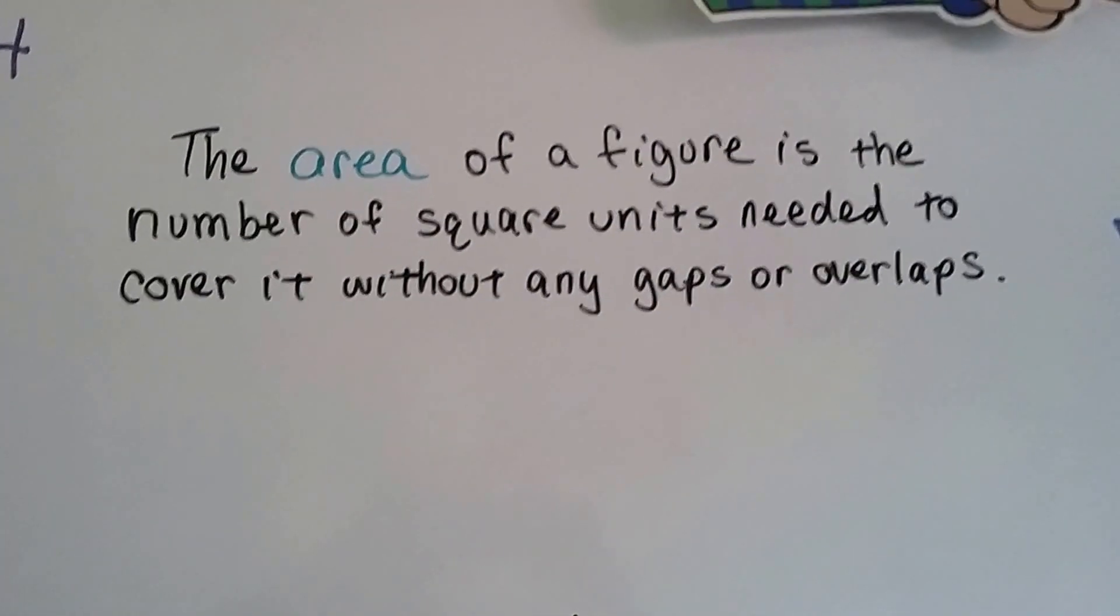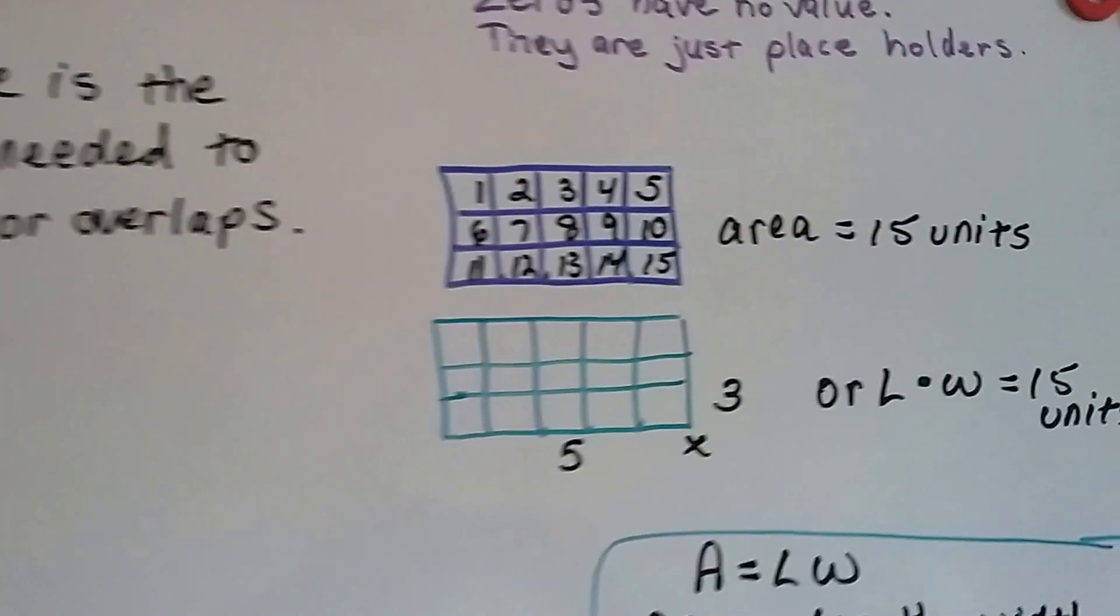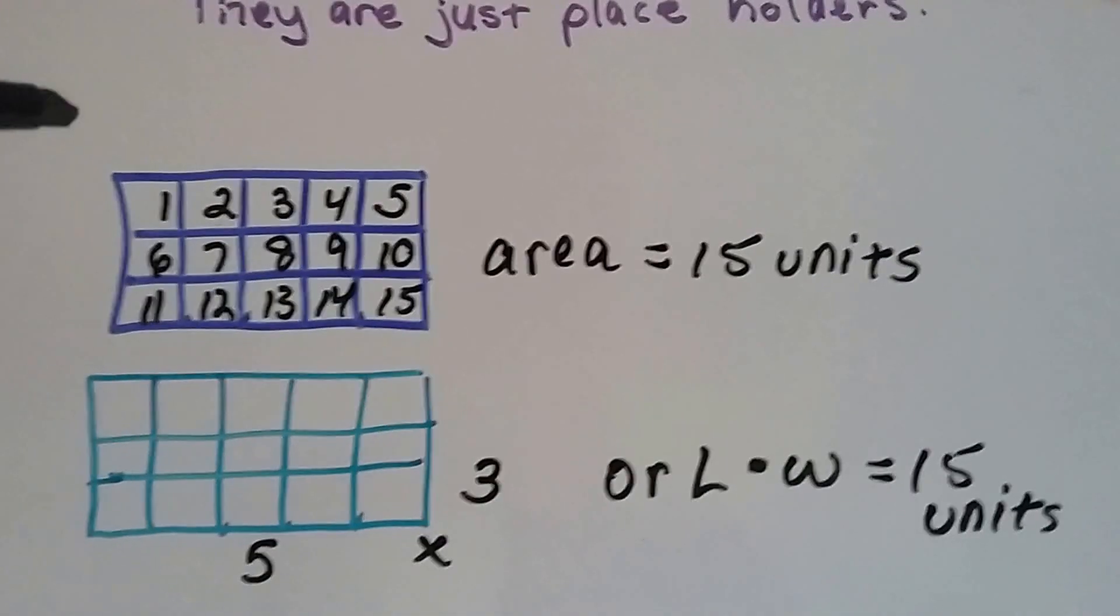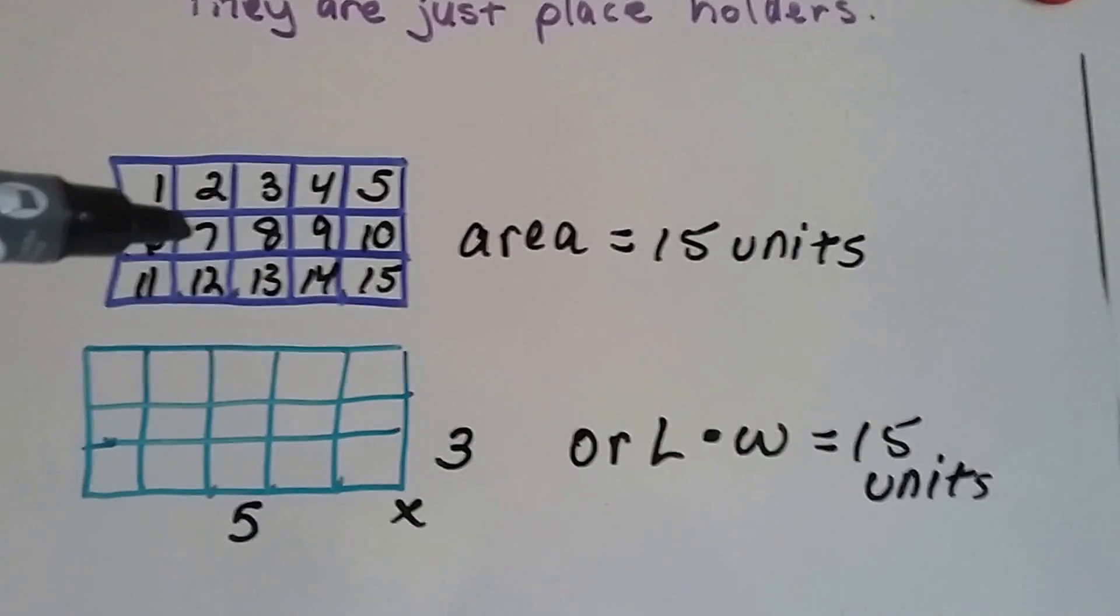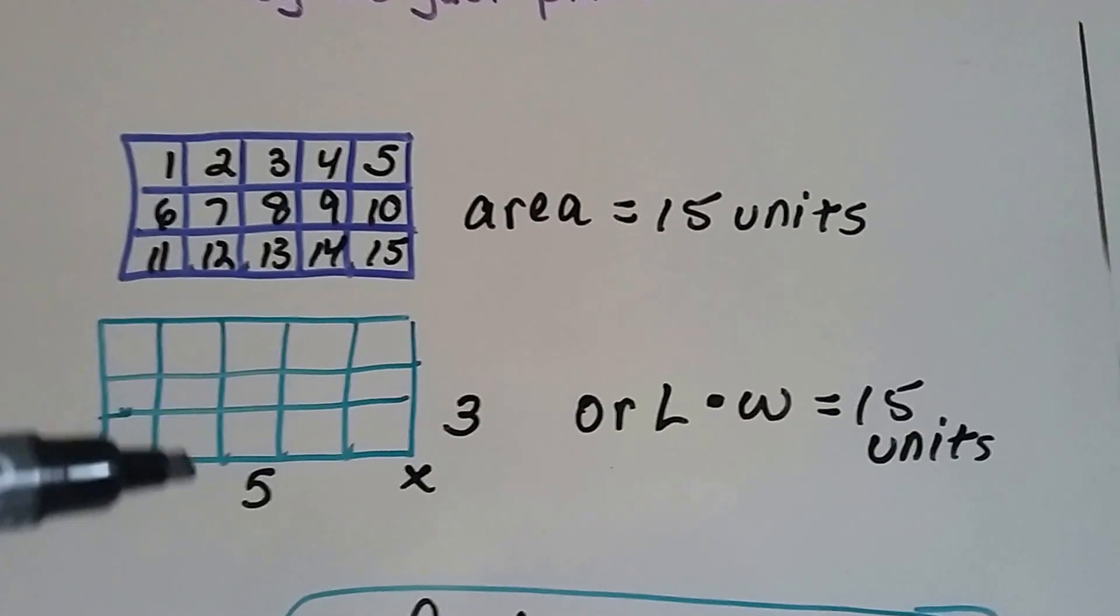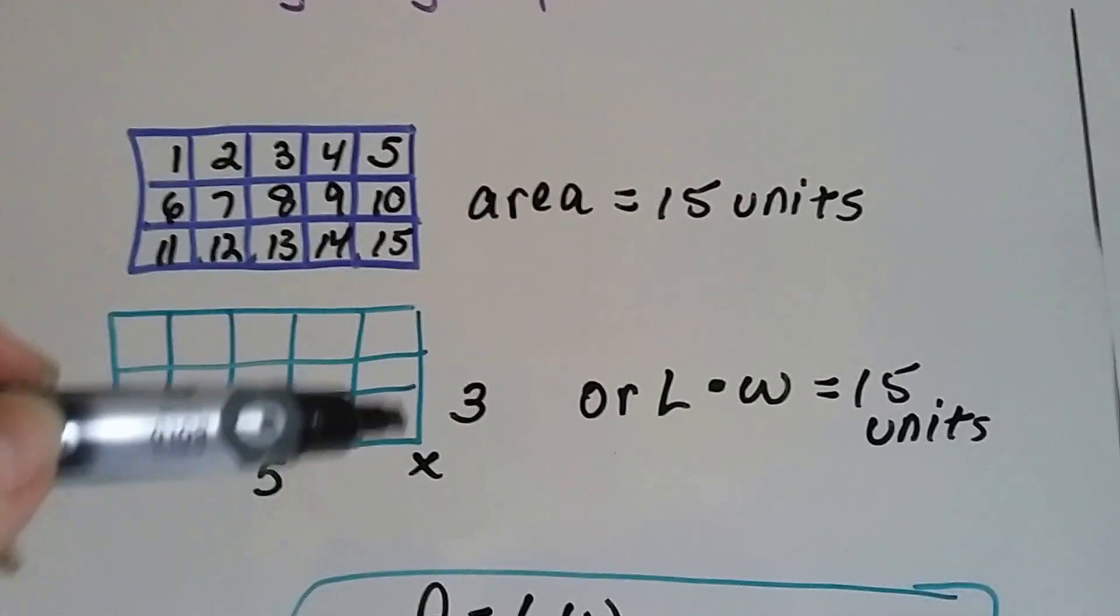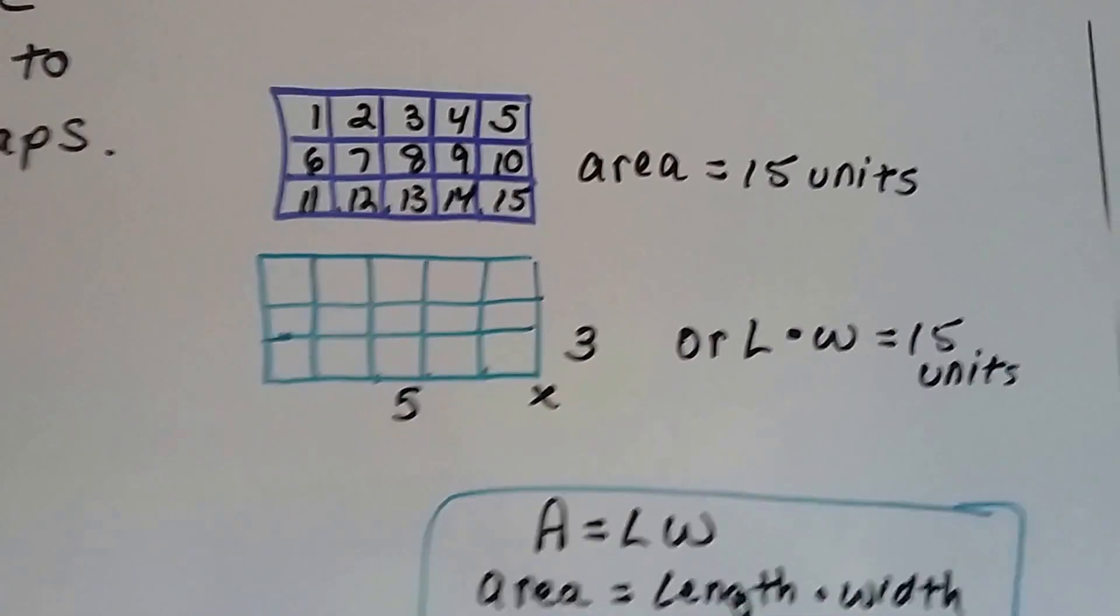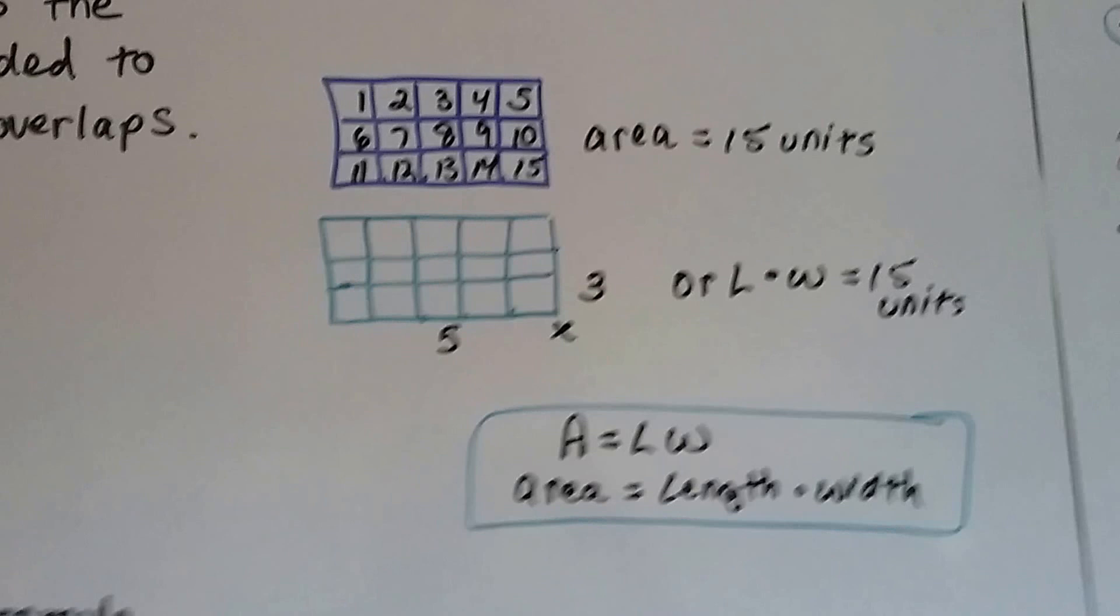The area of a figure is the number of square units needed to cover it without any gaps or overlaps. The area for this blue rectangle is 15 units. There's 15 squares inside of it. We could also have done it 5 of these square units times 3 going this way, or the length times the width. That makes it 15 units. The area is equal to the length times the width.